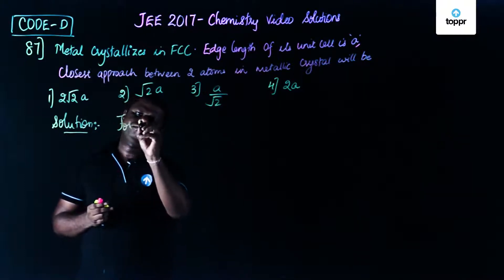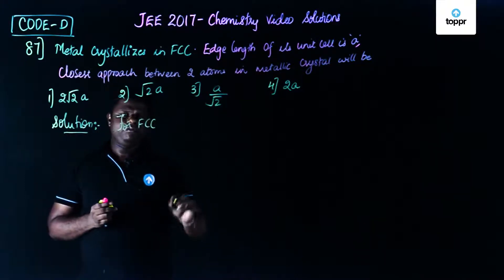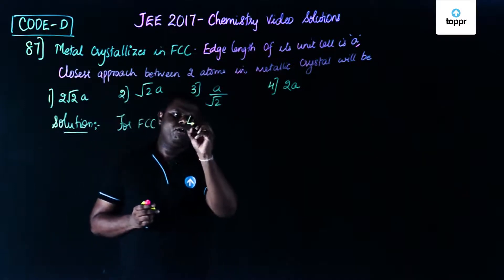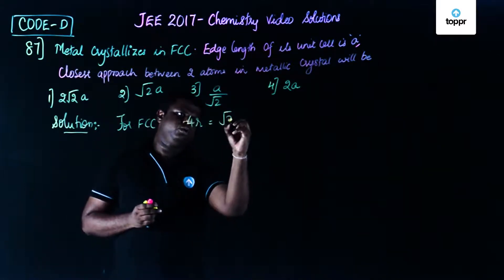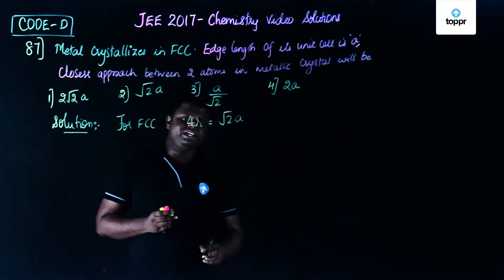for FCC we have 4r is equal to root 2a. And I guess you might have done the derivation also.